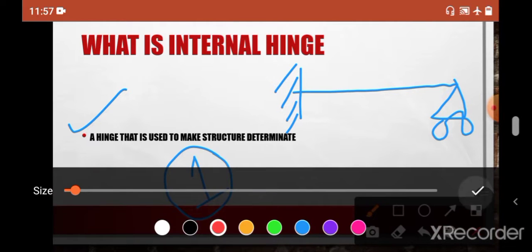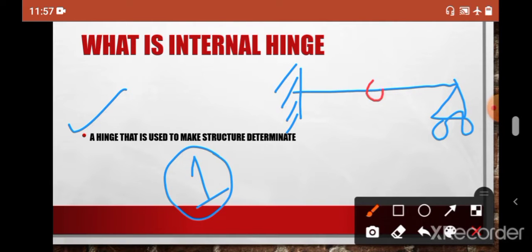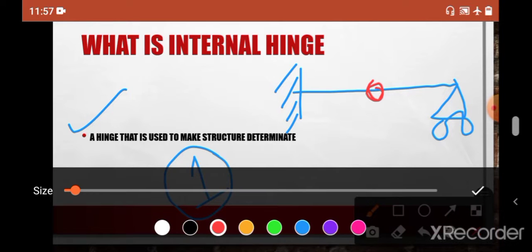Why? Because now you can analyze this beam into separate parts. The right part first: here is your roller support and here you can say this is hinge.